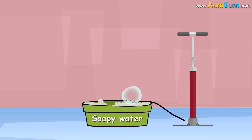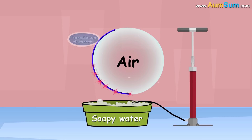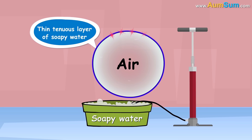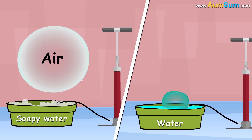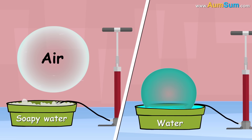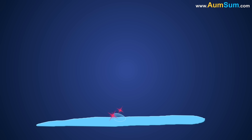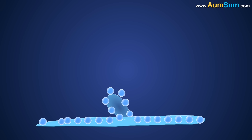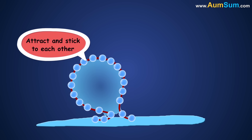A bubble is basically a pocket of air surrounded by a thin, tenuous layer of soapy water. This thin layer can be of just water too, but such bubbles don't float. Bubbles form because of a special property of water molecules to attract and stick to each other.